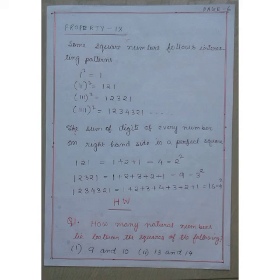The sum of digits of every number on the right hand side is a perfect square. So if I write 121, if I add the digits, it will give 4. 4 is a perfect square, which equals 2².